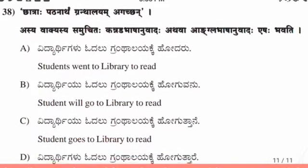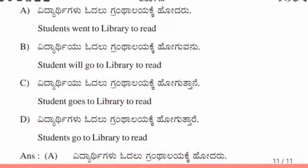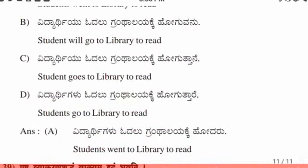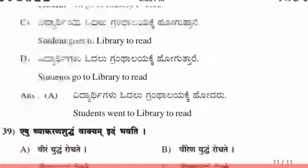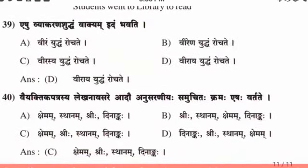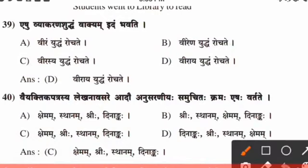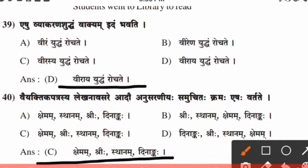Thirty-eighth question, the right answer is option A. Thirty-ninth question, the right answer is option D. And fortieth question, the right answer is option C.